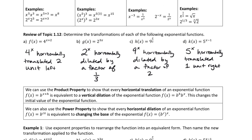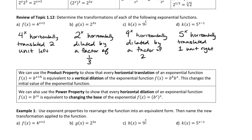Here's the gist of what we're learning today — these two boxes. We can combine those two ideas: we can use the product property to show that every horizontal translation of an exponential function, b to the x plus h, is equivalent to a vertical dilation when you multiply it — b to the h times b to the x. This changes the initial value of the exponential function.